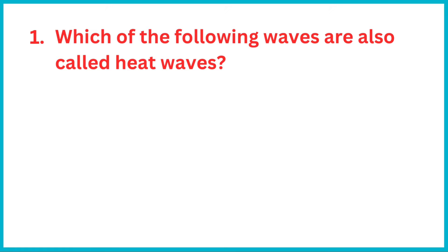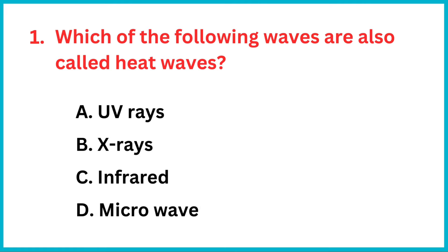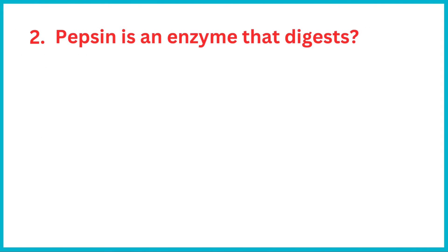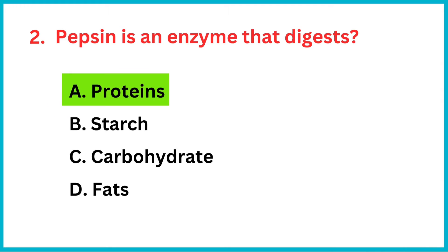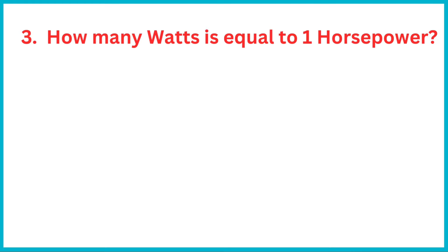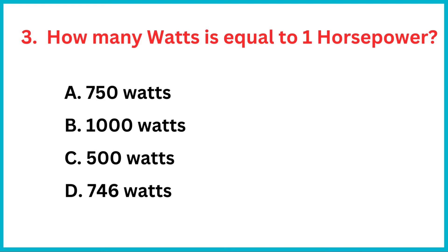Which of the following waves are also called heat waves? The correct answer is option C: infrared waves. Pepsin is an enzyme that digests — the correct answer is option A — proteins. How many watts is equal to one horsepower? The correct answer is option D: 746 watts.